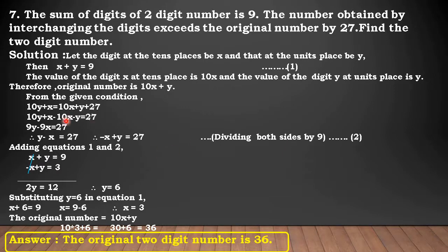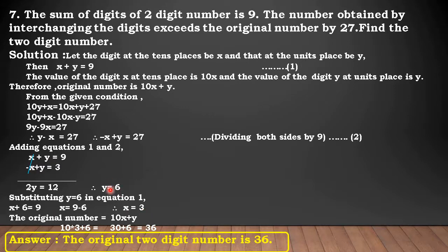Now, by adding equations 1 and 2, plus X and minus X get cancelled, and we get 2Y is equal to 12. Therefore, Y is equal to 6. Substituting Y equals 6 in equation 1, we get X plus 6 is equal to 9. Therefore, X is equal to 9 minus 6, that is 3. Now the original number is 10X plus Y. Substituting, we get 10 into 3 plus 6, which equals 30 plus 6, that is 36. Answer: the original 2-digit number is 36.